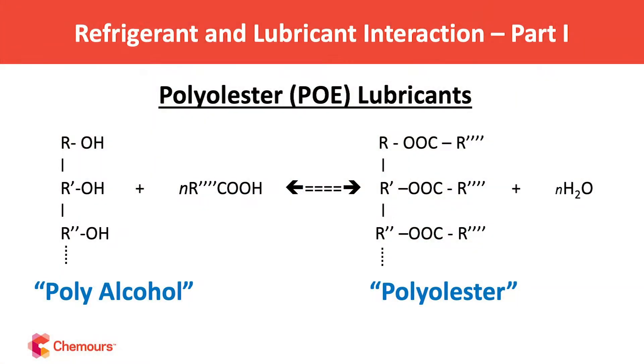That's the basic ester molecule. If we expand that a bit — instead of a simple alcohol with just one OH group, we have a polyol alcohol: a bigger, more complex molecule with many OH groups. That can react with organic acids during manufacturing. All those R, R-prime, and R-double-prime groups show the variety available to fine-tune viscosity grades and properties. When that polyol reacts with the acid, you get a polyol ester — and water is the byproduct. Importantly, notice from the double-headed arrow that this is a reversible reaction. In the next video we'll discuss what happens when water reacts with POE and can drive the reaction in reverse. But essentially, that's where the name POE comes from.